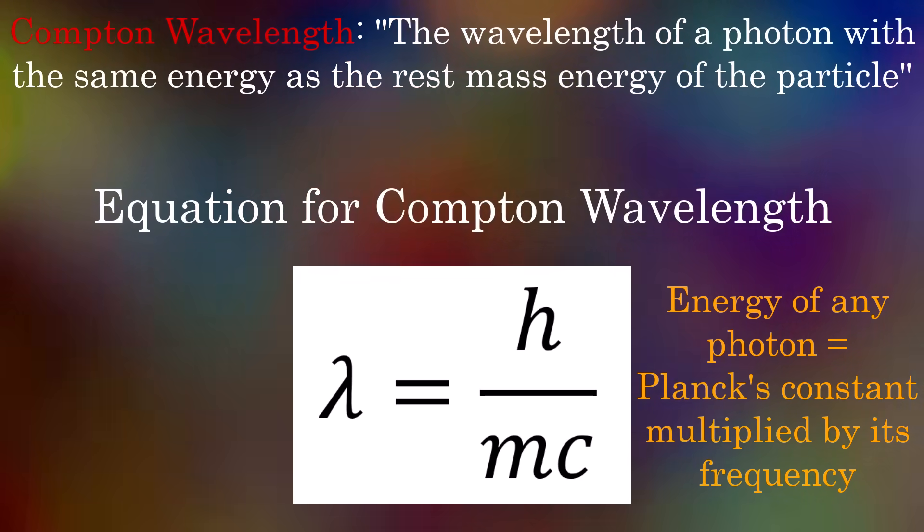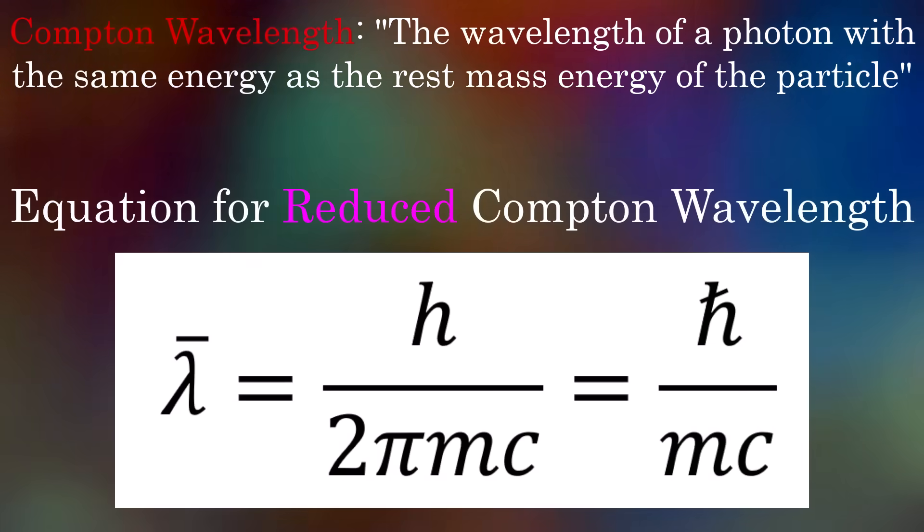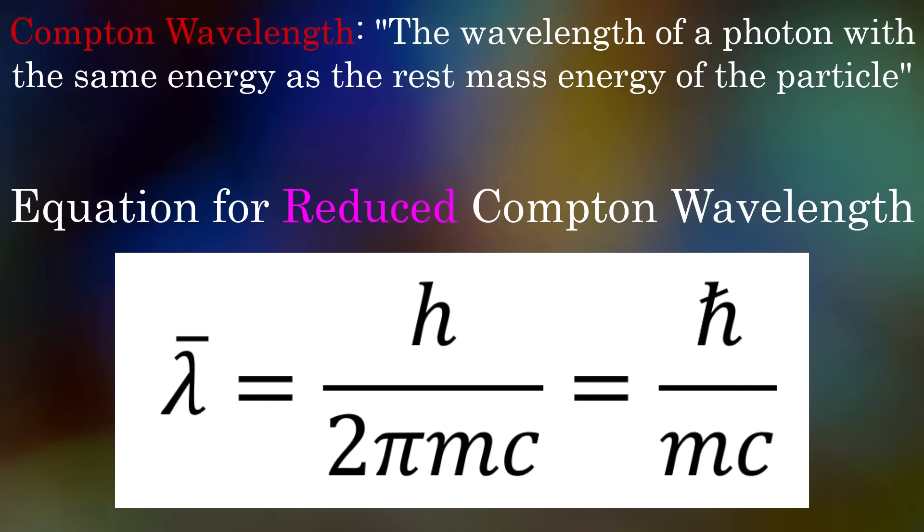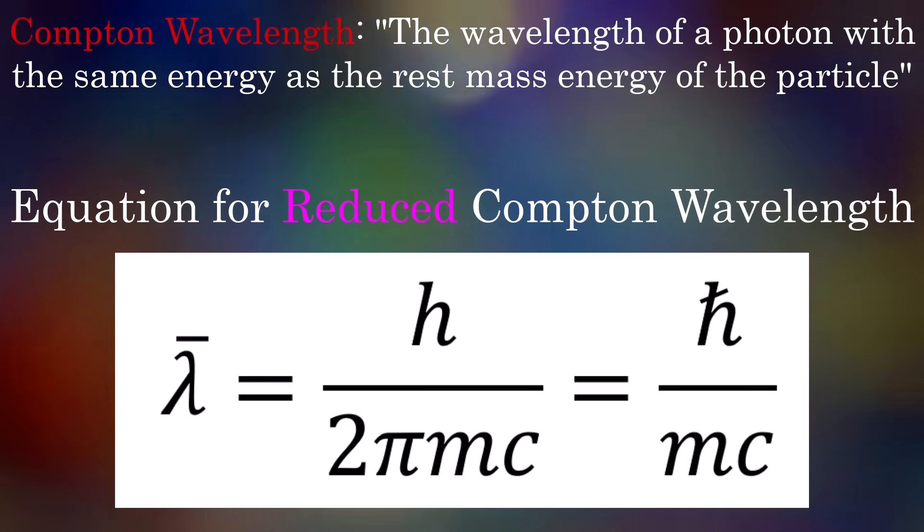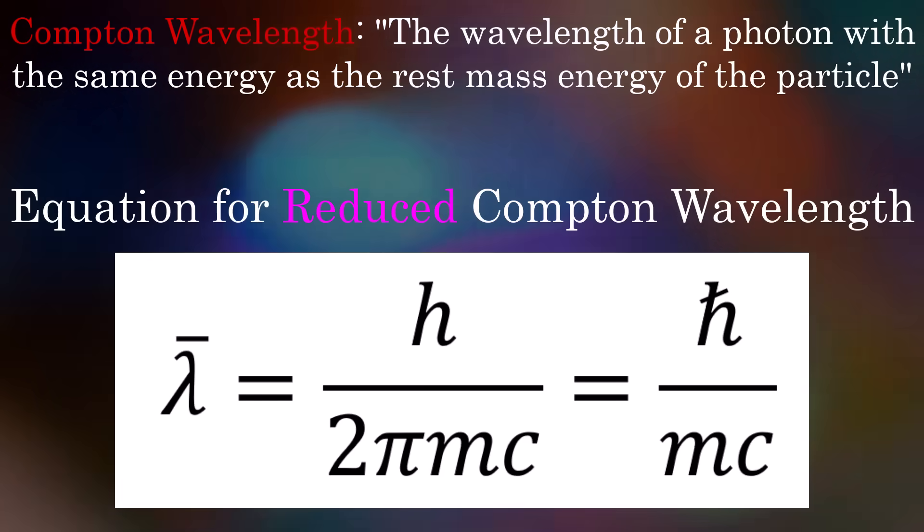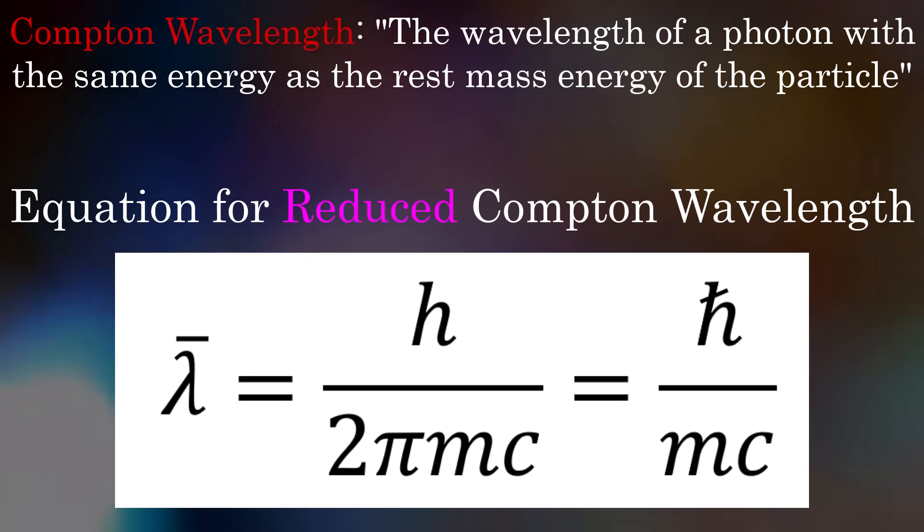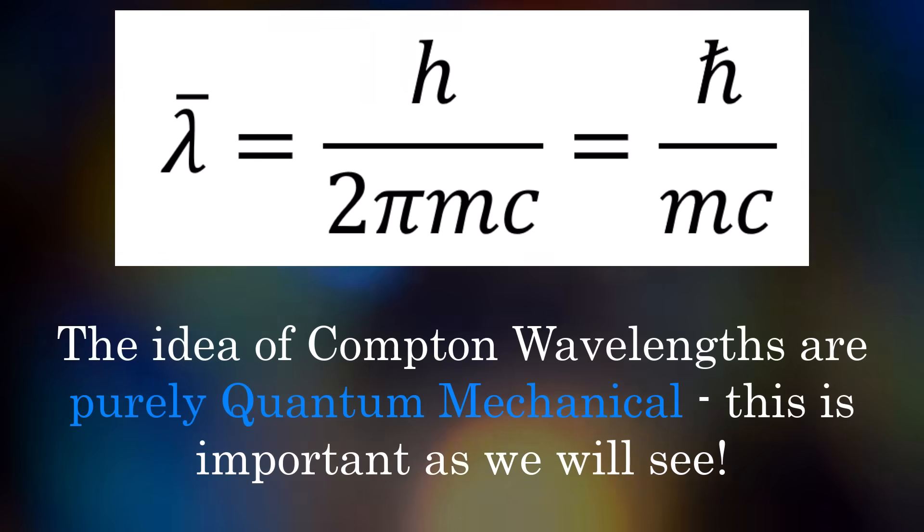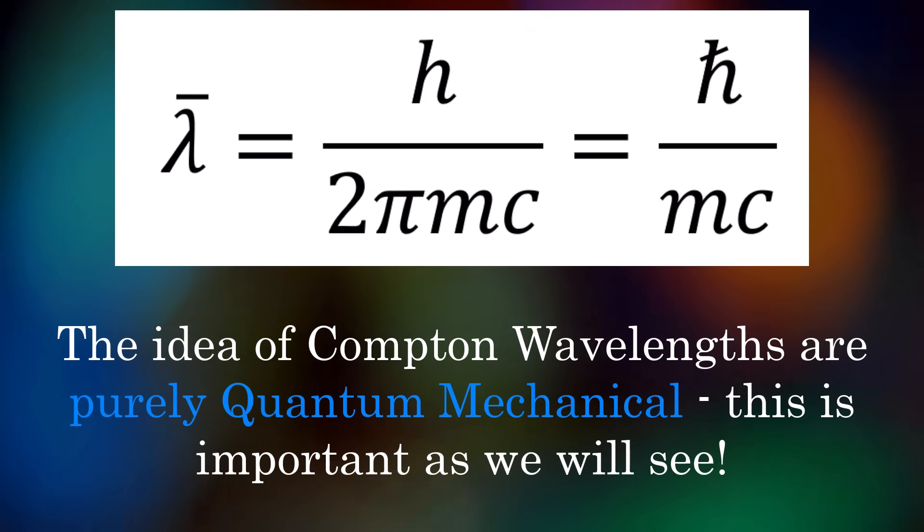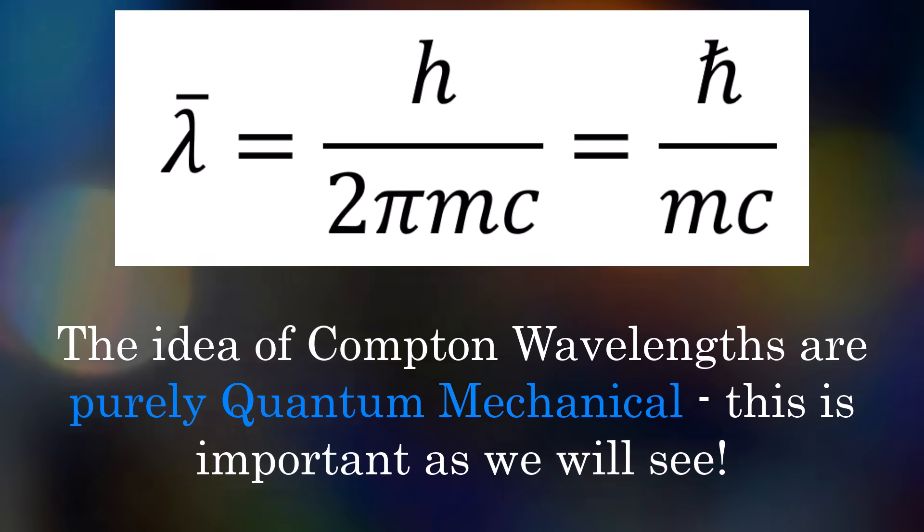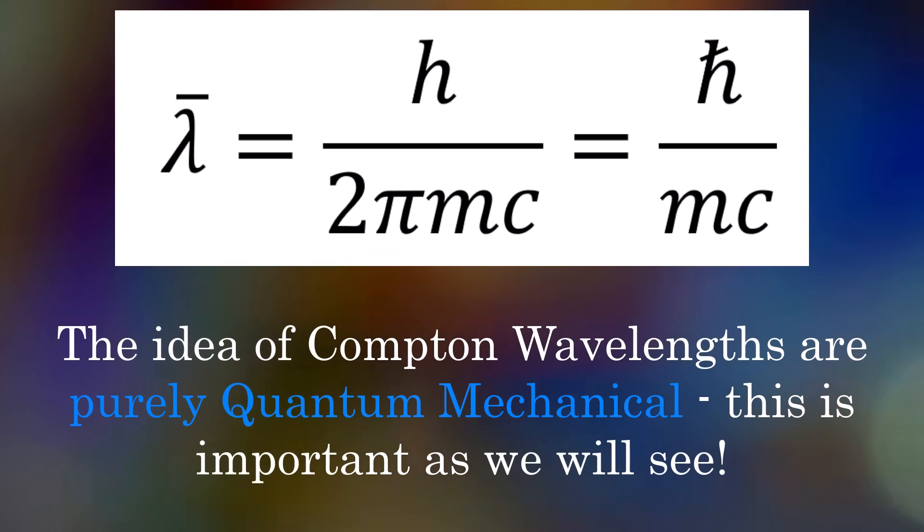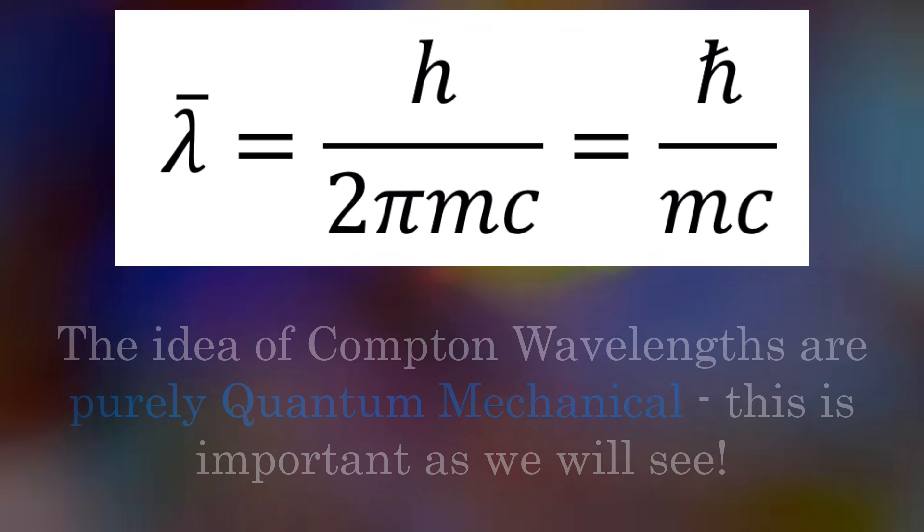In order to get the reduced Compton wavelength, we divide it by 2π, which has the same effect of dividing H by 2π to get ℏ, or the reduced Planck's constant. ℏ functions exactly the same as H does. It has the same units for example, but modern physicists prefer using ℏ instead of H as in many quantum mechanical calculations, factors of 2π appear all over the place, making writing them all out and keeping track rather cumbersome. So we absorb many of these 2π factors into H to get ℏ.